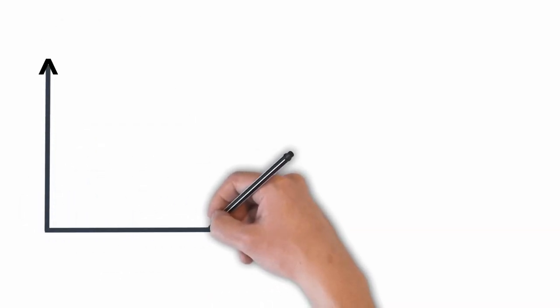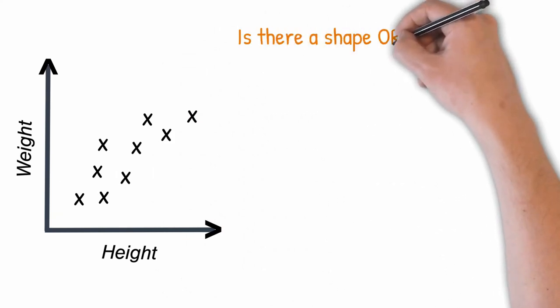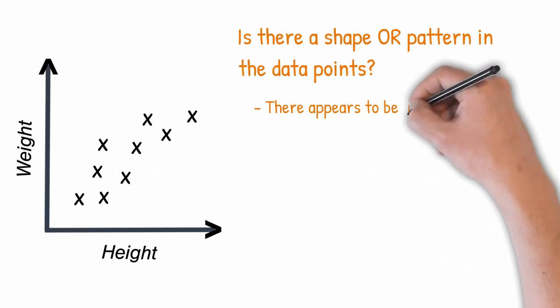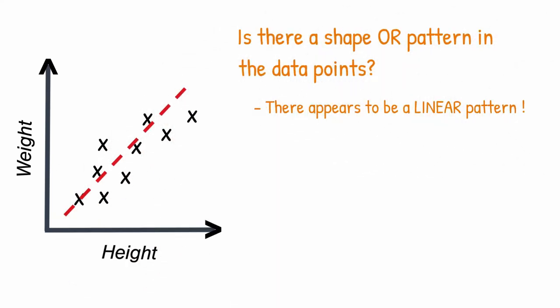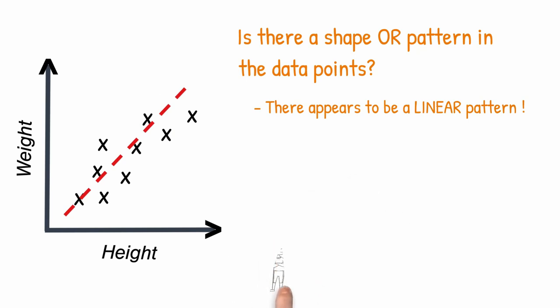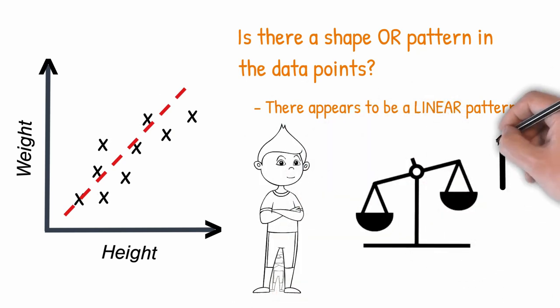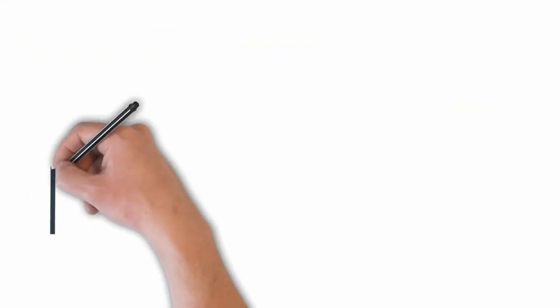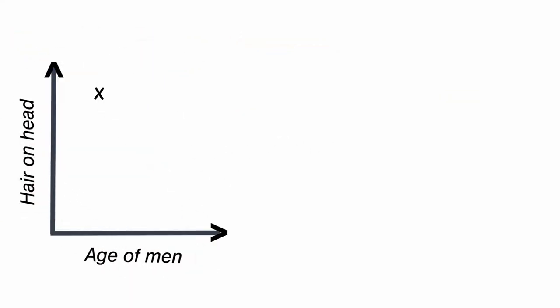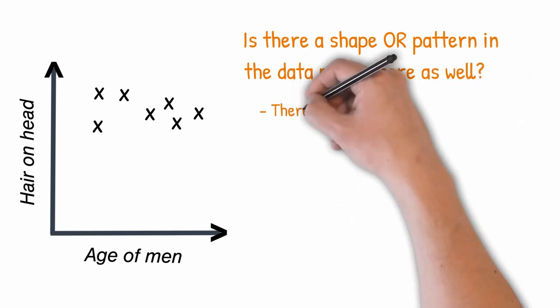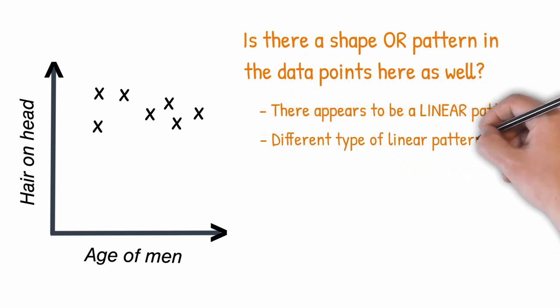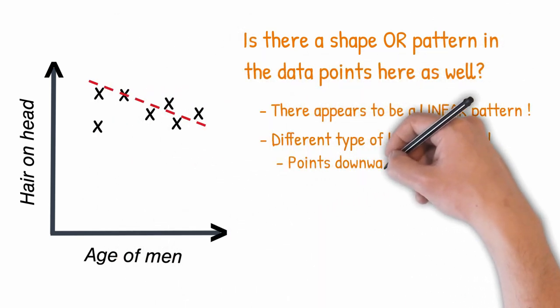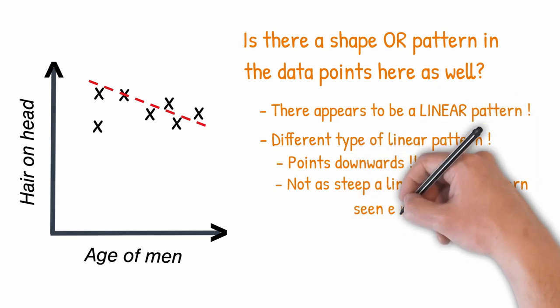To delve further, let's plot height and weight of different individuals on a graph. Do we see any pattern? We can observe some type of linear pattern in the data points. As the height increases, the weight tends to increase. Let's look at another example of plotting age of men versus the hair they have on the head. Here again we see some kind of linear pattern except that it points downwards and is not as steep. The slope indicates how strongly one variable varies with reference to the other.